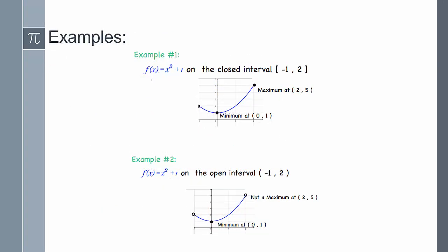For example, I graphed x² + 1 on the interval negative one to two. My maximum value is here — this is the highest value, at x = 2, and the y-value is 5, so the maximum is 5. My minimum is the value at (0, 1).